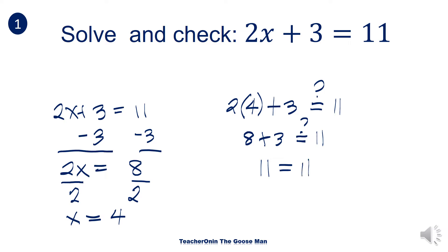So 11 equals 11. Since 4 makes the equation correct, therefore the value of x equal to 4 is the true value of x.